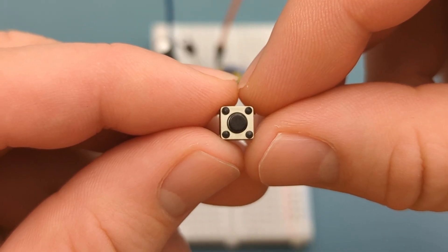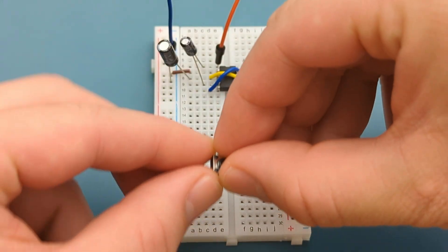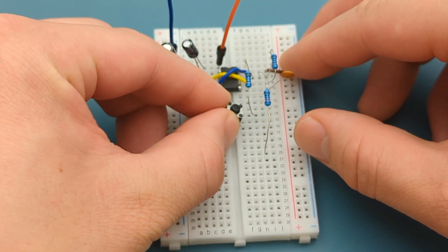Insert a push button switch in the middle of the breadboard. One leg is in the same row as the 1000 ohms resistor.